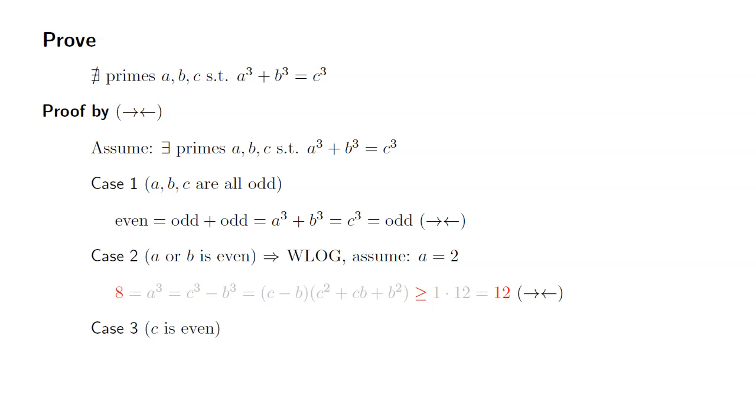How about Case 3? c is even, which means c = 2. Start with the equation. We know that a³ + b³ is at least 8 + 8, because a and b are at least 2, which gives you 16.